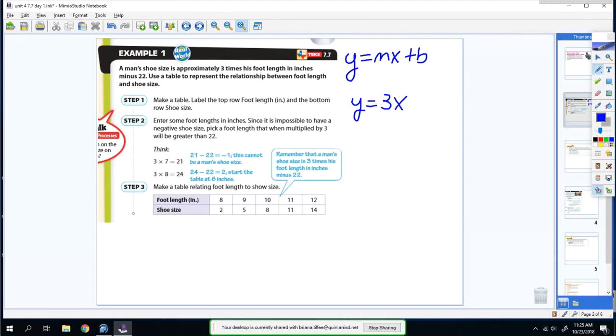So it'll be 3x, and then it says minus 22, so you're going to do minus 22. That's your equation: y = 3x - 22. Then all you have to do is create a table. I personally like to create my table like this.